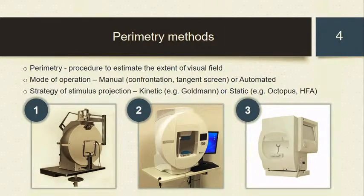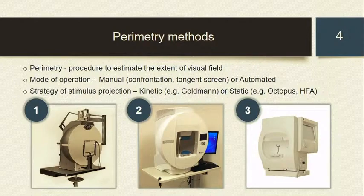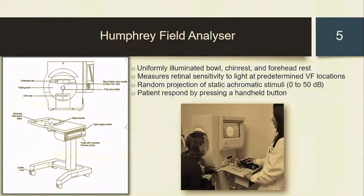Manual perimetry methods like confrontation or tangent screen are still useful in certain situations, especially for individuals who cannot adapt well to the automated interface. During a visual field examination, stationary targets (static) or moving targets (kinetic) are used to evaluate the sensitivity of the visual system — two different strategies of stimulus projection. When the target is a moving one, we call it kinetic perimetry. Today our prime focus is on the Humphrey Field Analyzer, which I will abbreviate as HFA.